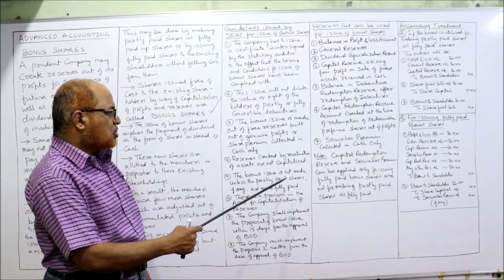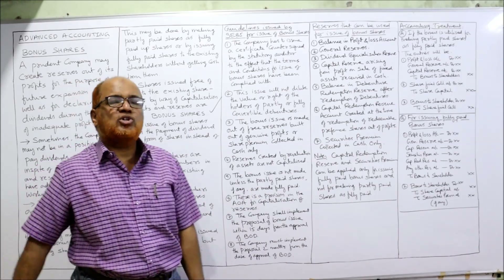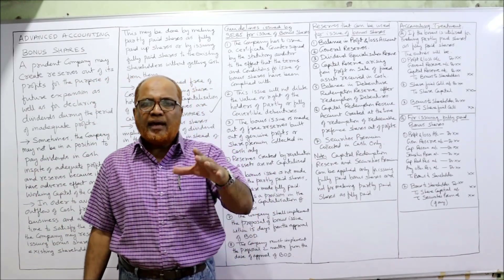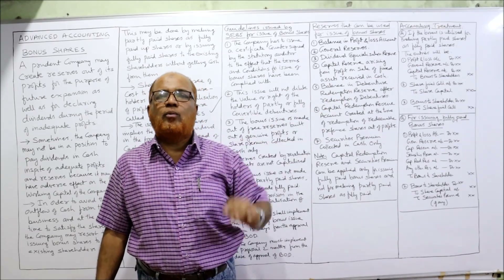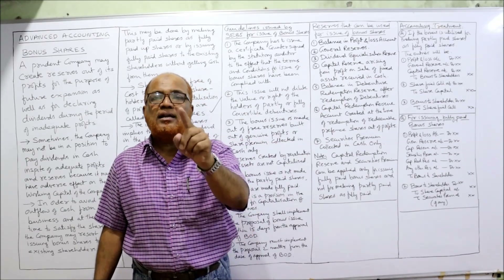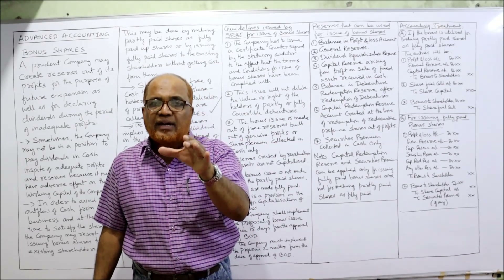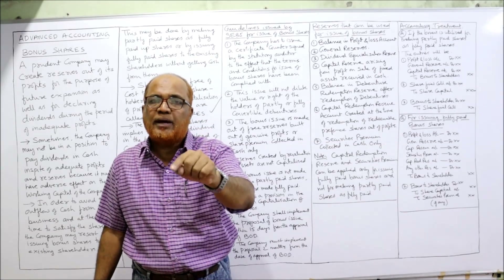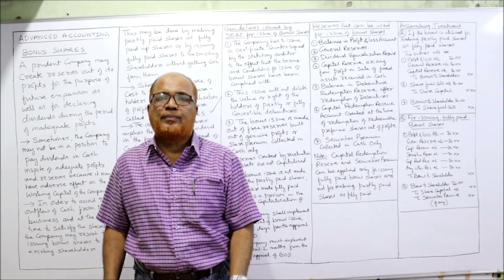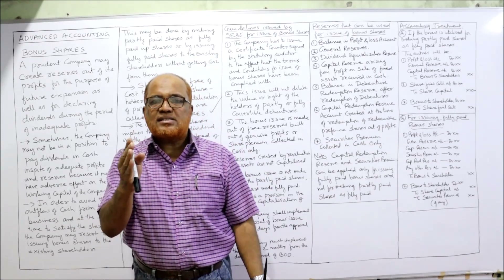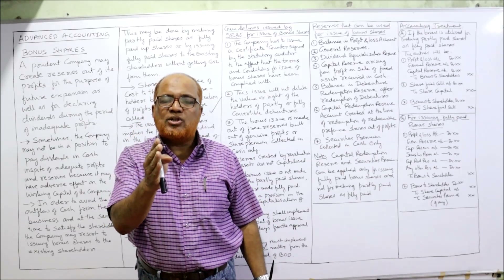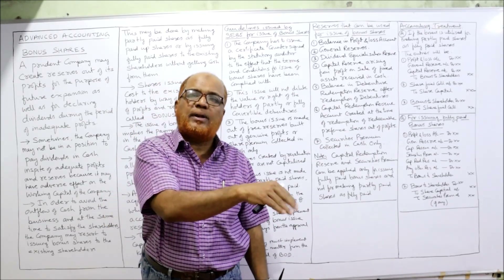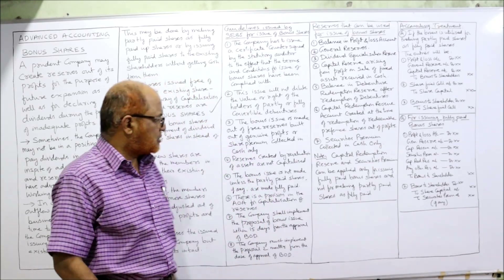The bonus issue cannot be made unless partly paid shares are converted into fully paid. A company cannot issue fully paid bonus shares until and unless, if it is having partly paid shares, those partly paid shares are converted into fully paid. First, convert the partly paid shares into fully paid shares; then only the company can issue fully paid bonus shares.